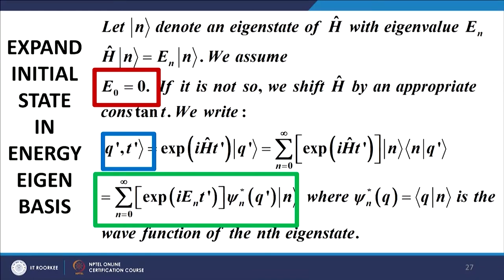The wave functions of the ground state would not be localized in coordinate space, so we need to integrate over all coordinate space to recover the complete wave functions. The first step is to assume the ground state energy E₀ = 0. If the ground state energy is not zero, it can be made zero by shifting the Hamiltonian operator by a constant. The index n now indexes the energy states rather than position states, and the Hamiltonian operating on its own eigenstate generates the corresponding energy eigenvalue.